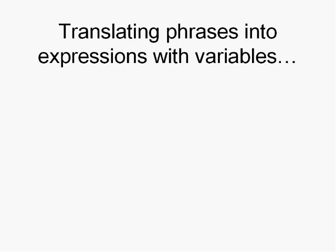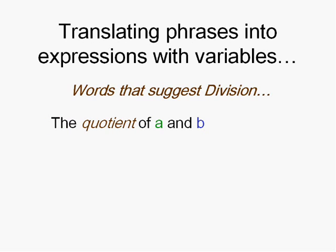Finally we have your old buddy division. The words that suggest division we've kind of covered a little bit. The word quotient is the answer to a division problem. So as soon as you see the word quotient, it's just telling you use division. The quotient of a and b means a divided by b. Or a over b as a fraction you could write it.